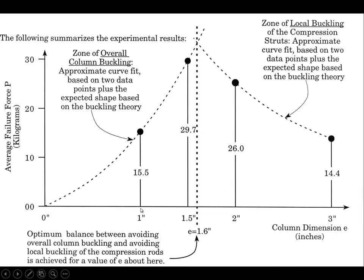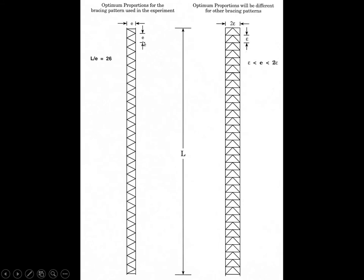We looked at a one-inch column, an inch-and-a-half column, a two-inch column, and a three-inch column, and discovered that the strongest was the inch-and-a-half. It tapered off as we went to larger dimensions because we got more and more local buckling. The one-inch column failed at a lower load because overall buckling was more likely. Throwing curves through the data and finding the intersection gave us 1.6 inches as the optimum dimension for this particular geometry, giving a ratio of L over E equal to 26.